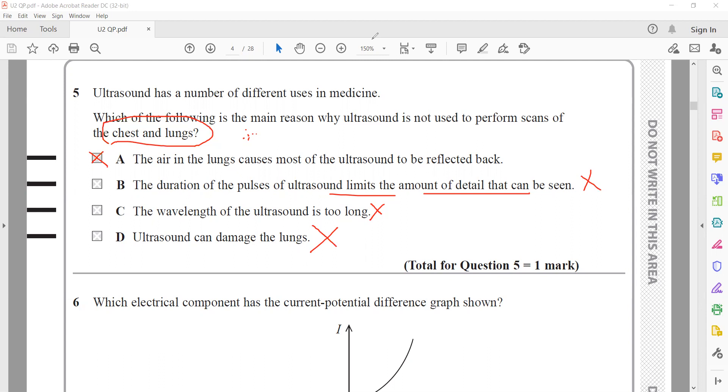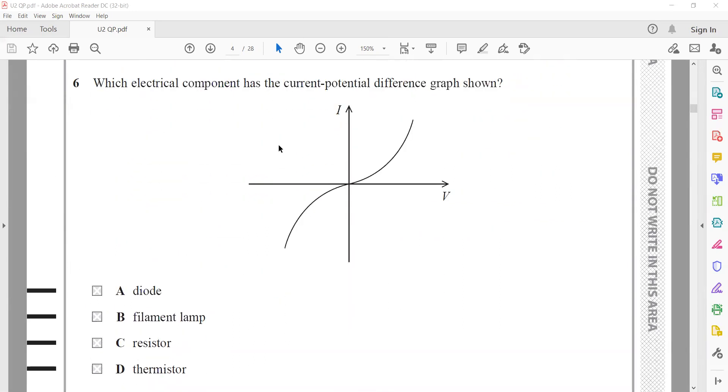Which electrical component has a current and potential graph as shown? Here the slope represents one over R because current is on the y-axis and voltage on the x-axis. The slope is increasing, meaning resistance is decreasing. For a diode, there should be a certain voltage before it starts to conduct, so it cannot be a diode. If it was a filament, when current passes there are more collisions between electrons and the lattice, which increases temperature and resistance. The slope should decrease, but the slope is increasing. A fixed resistor should be a straight line. So it is a thermistor. D is the right answer.